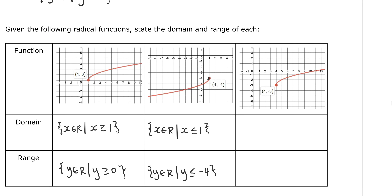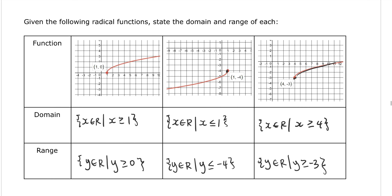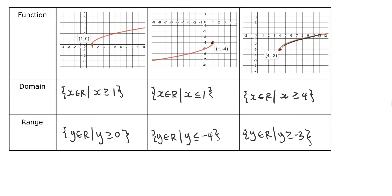For the third example, the x values start at 4, so the domain is x ≥ 4 — there are no x values less than 4 on the graph. For the y values, y is every real number such that y ≥ −3. The y values start at −3 and only go up, so there are no y values below −3. Now that we have a picture of how to get the domain and range, let's look at some of the transformations.